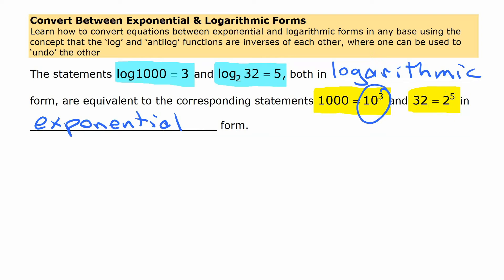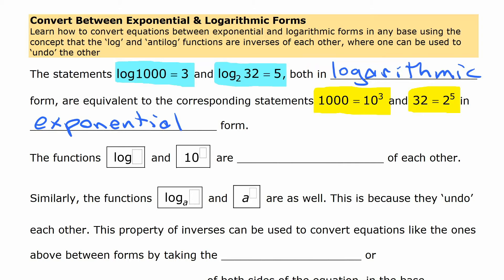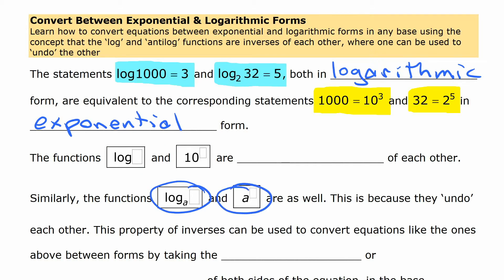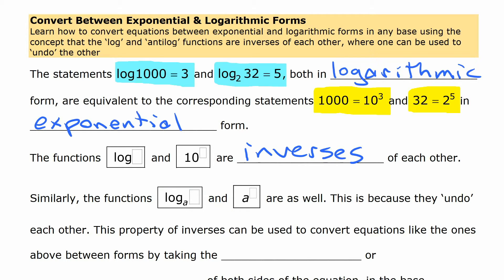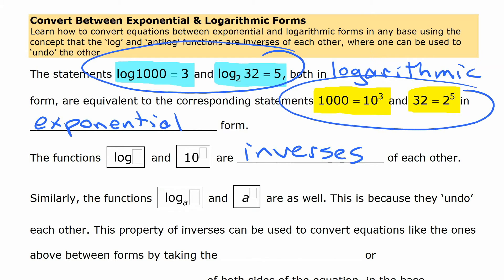What we're looking at is how we can convert between those two forms using the idea that logarithms and exponentials are inverses of each other. We've seen how one key undoes the other on a calculator — they're inverse operations. The reason is because one undoes the other, and this property of inverses can be used to convert equations between logarithmic form and exponential form.